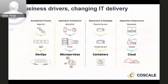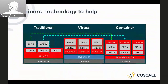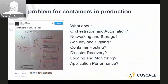Let's talk about how CoScale fits in the OpenShift ecosystem by first looking at the problem OpenShift tries to solve. When we look at the evolution of application architectures, we see a clear shift from monolithic applications running on physical servers or VMs towards more agile development of microservices supported by containers and cloud infrastructure. Running containers in production at scale poses new challenges: orchestration, automation, networking and storage, security, hosting, disaster recovery, logging and monitoring, and general application performance.